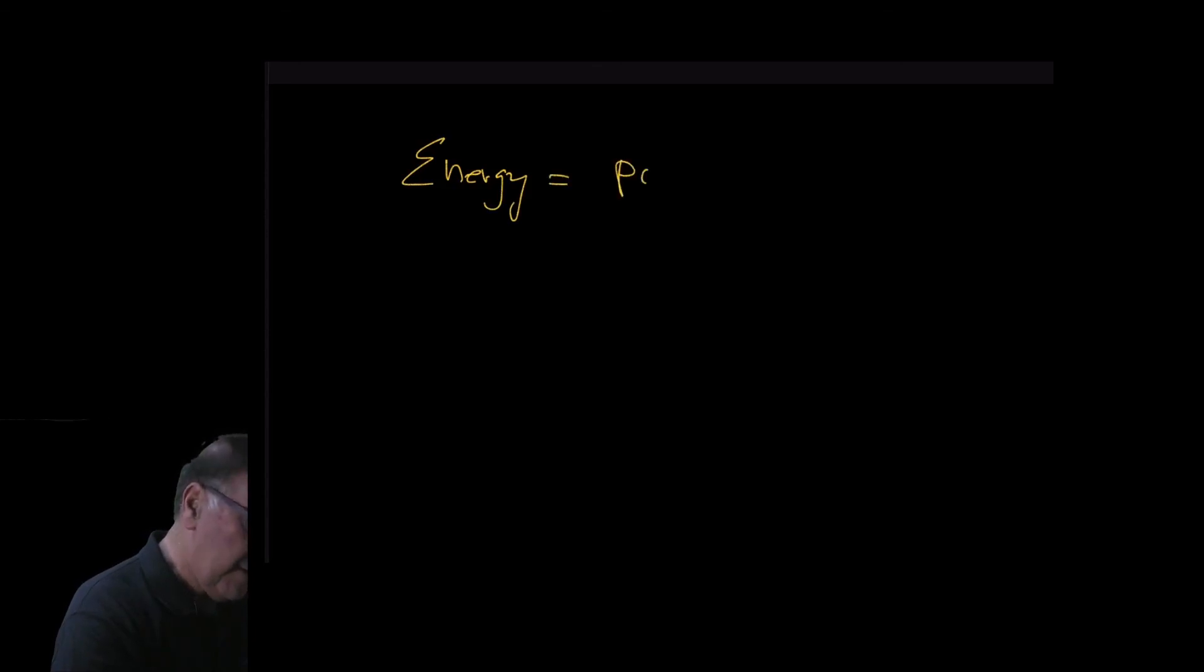So if we're paying for electricity, we would use this equation for energy. Energy is power times time. And energy is how much, power is how fast, and time is how long.